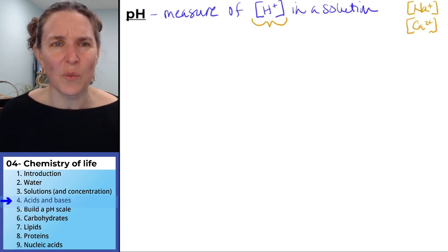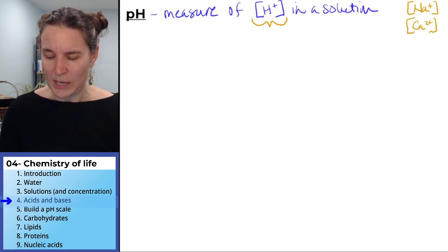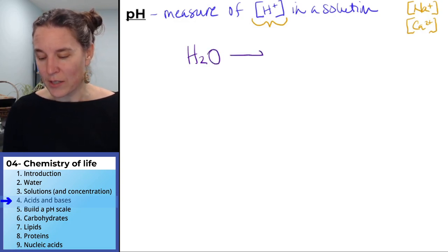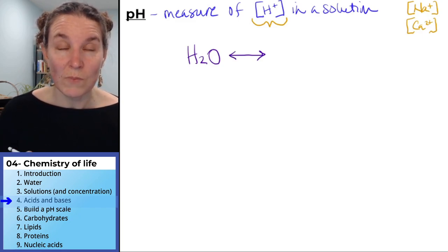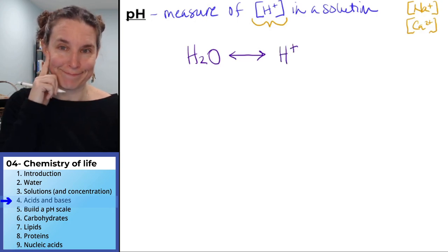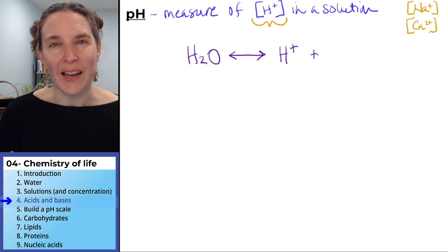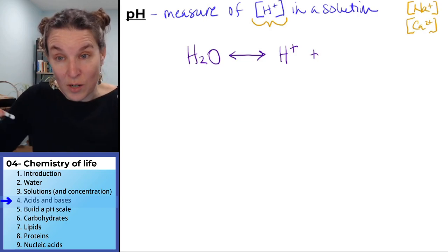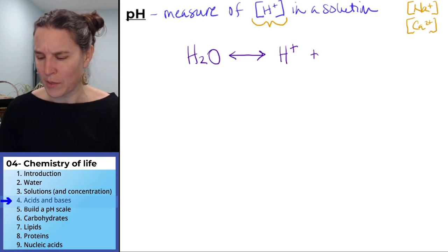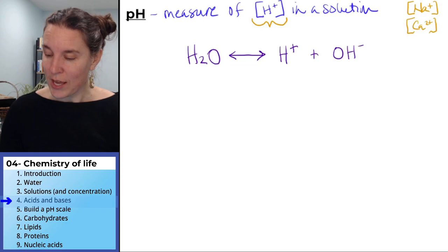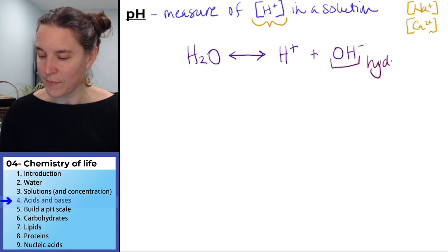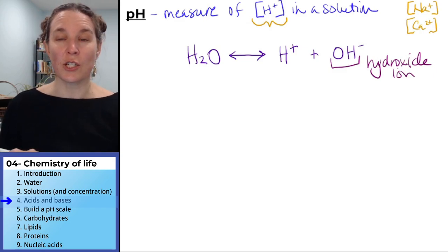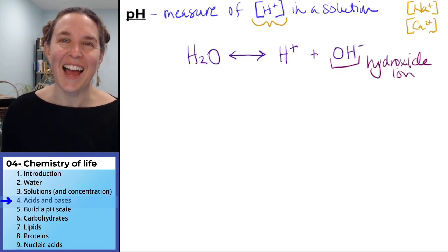So hydrogen ions, like where would these things even come from? Well, it's super interesting because water, H2O, actually dissociates into hydrogen ions. And what would be left? If we took a water molecule and we took one of the hydrogen atoms off and left an electron behind, what's going to be left over? An OH that has a negative charge. This is called a hydroxide ion. And the hydrogen, the positively charged hydrogen is called a hydrogen ion.